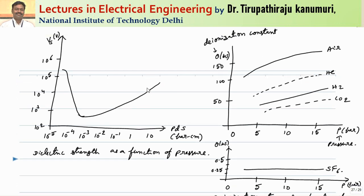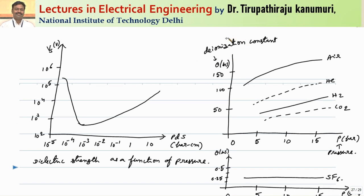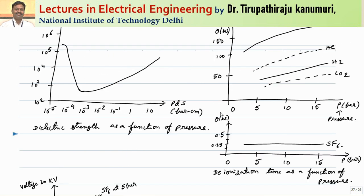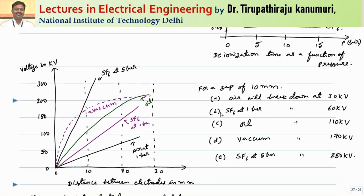Along with increasing the dielectric strength, we also have to deionize the medium. Deionization again depends on the pressure. With the increase in pressure, for different types of gases, the deionization time in microseconds is represented by a curve. Out of all gases, CO₂ has the minimum deionization constant, then hydrogen, then helium, and the highest is normal air. But for SF6, deionization happens in only 0.25 microseconds compared to more than 50 microseconds for other gases. That is why SF6 has the highest applicability.